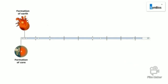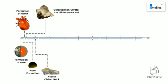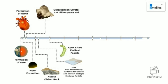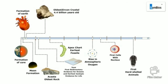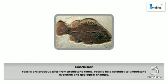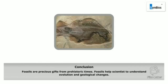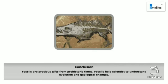Fossils play an important role in understanding how the earth evolved. They tell us about the environment that existed in a particular location when the fossil formed. Scientists utilize information from fossils to reconstruct body types of extinct organisms and to explain the evolutionary links between living organisms. Fossils are thus precious gifts from prehistoric times, helping scientists understand evolution and geological changes.